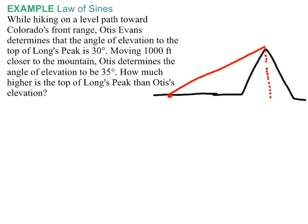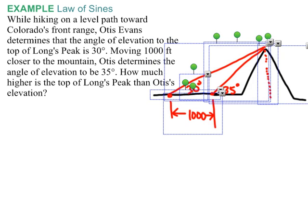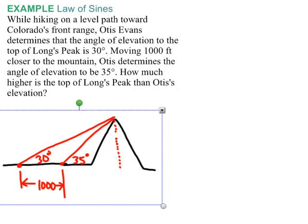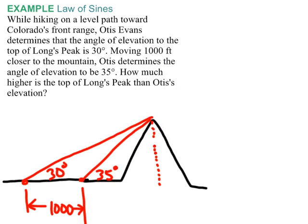So let's say Otis is back here. We're not going to worry about his eyeball height and his angle of elevation starting at 30 degrees. And then he gets closer, 1,000 feet, and all of a sudden the angle of elevation is 35 degrees. And so let's put all the necessary information on our sketch. We're going to assume here that the units are feet. And I'm realizing I need to make that picture a little bit bigger because I need to add some extra information in there.